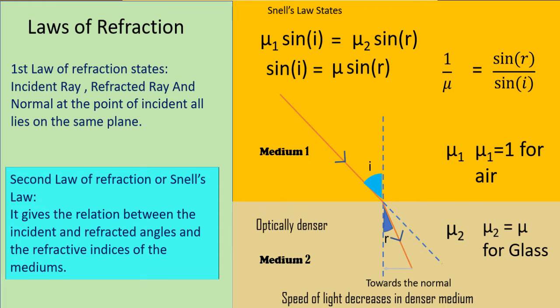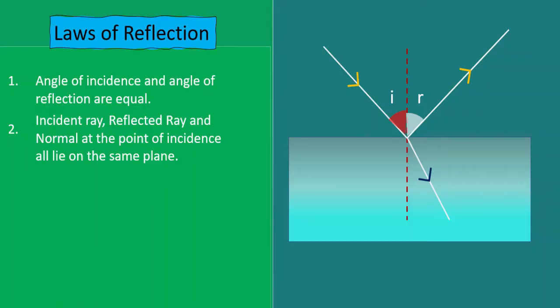First we will study the law of reflection, and then we will come to the law of refraction. The first law of reflection states that the angle of incidence and the angle of reflection are equal. The incident angle is the angle which the incident ray makes with the normal, and the reflected angle is the angle which the reflected ray makes with the normal. So angle i must be equal to angle r.